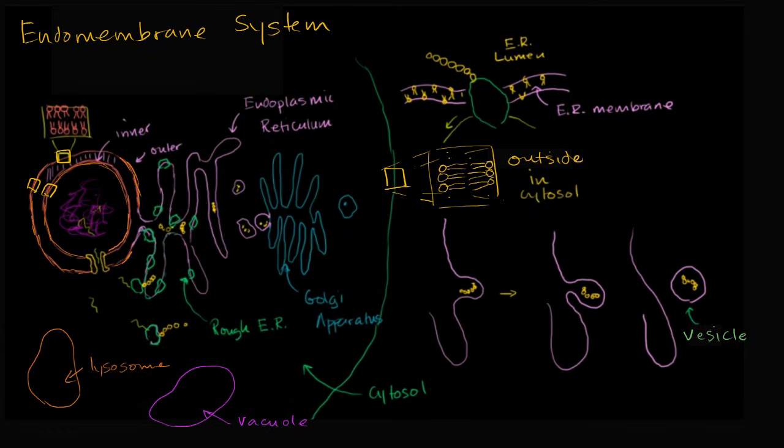This one that I'm starting to trace in magenta, that's the outer membrane of the nuclear envelope. And it's continuous with the membrane of the endoplasmic reticulum, which I'm starting to highlight right over here. And then the one that I'm highlighting in this purple color, this is the inner membrane of the nuclear envelope. And all of this is part of the endomembrane system.